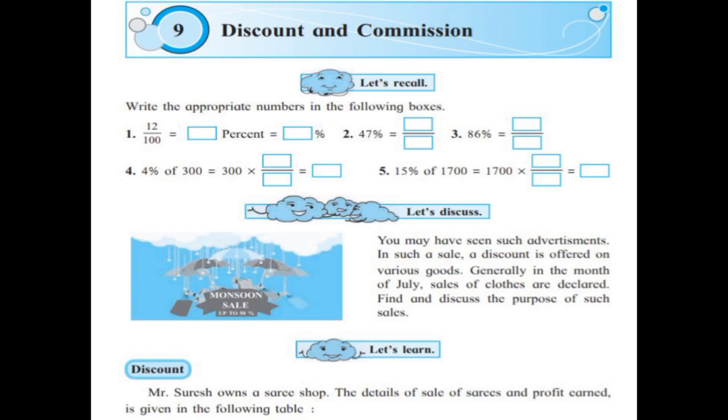First one, 12 upon 100 means 12%, that is equal to 12%. 47% means 47 upon 100. 86% means 86 upon 100.